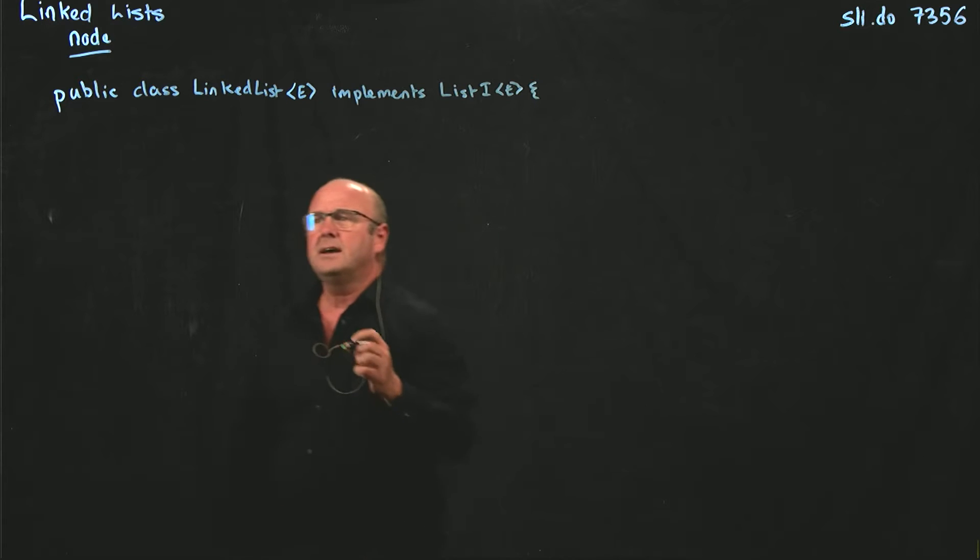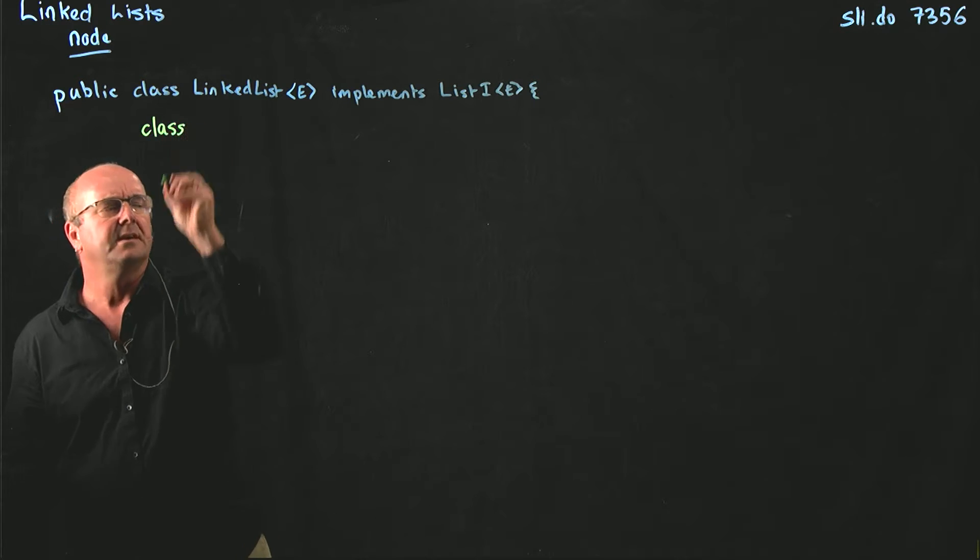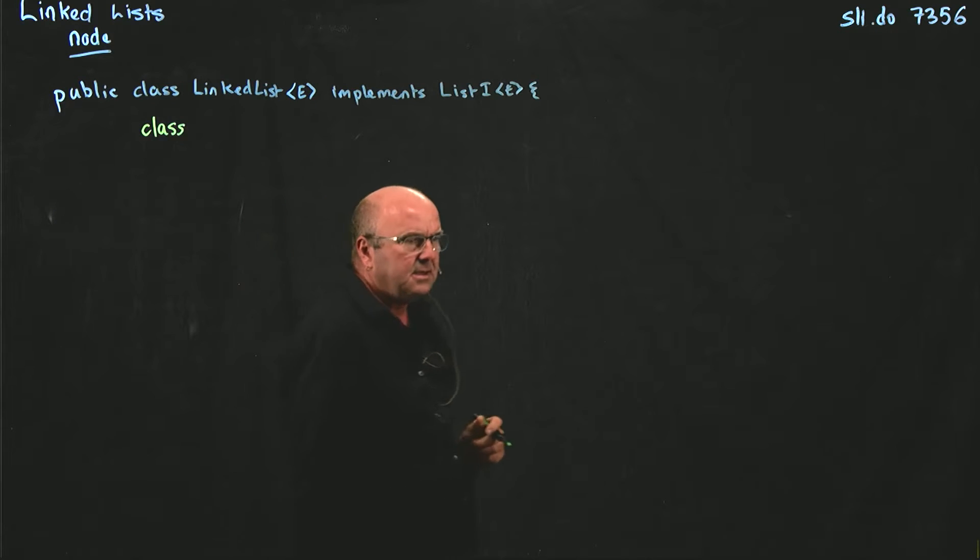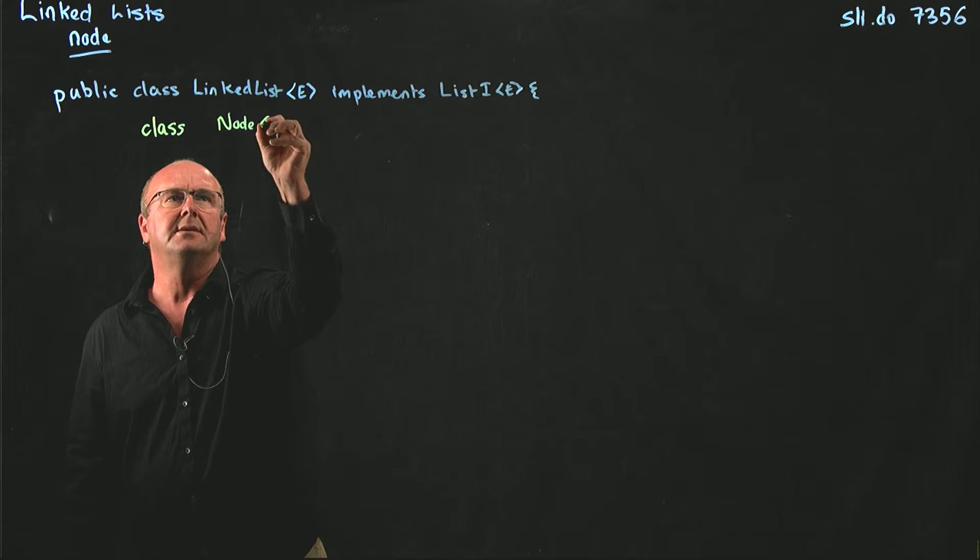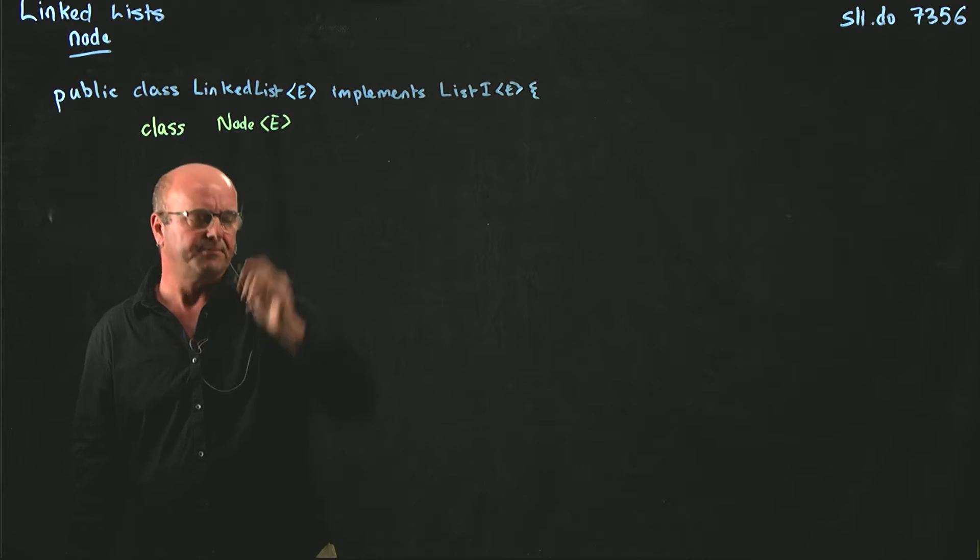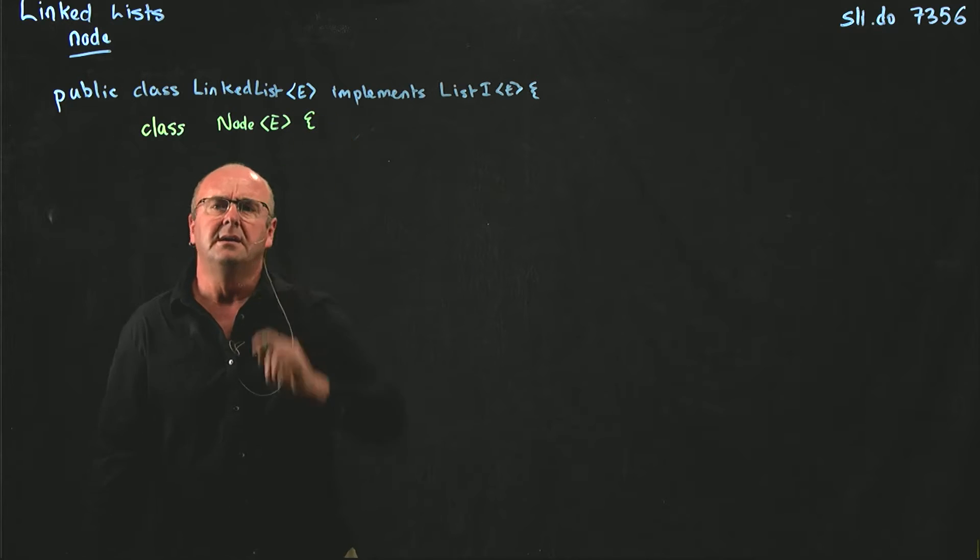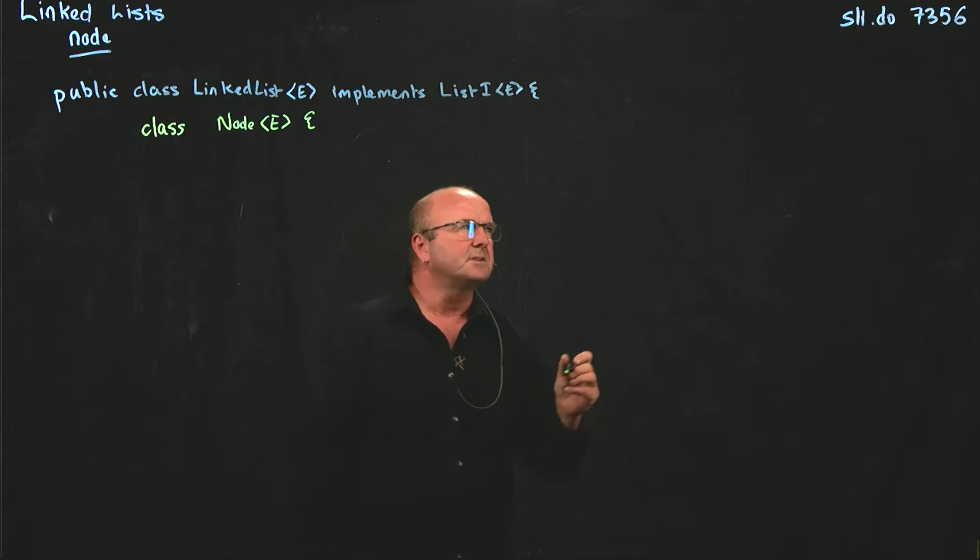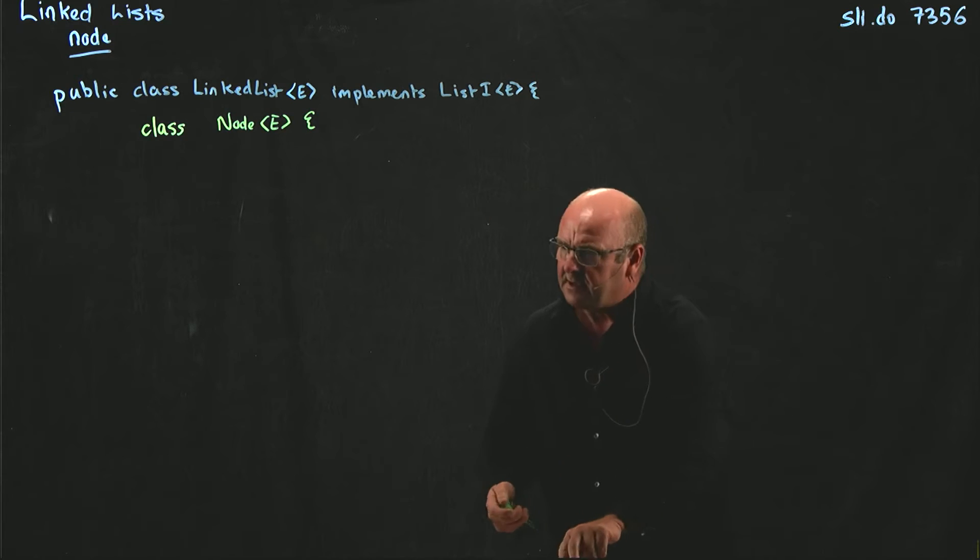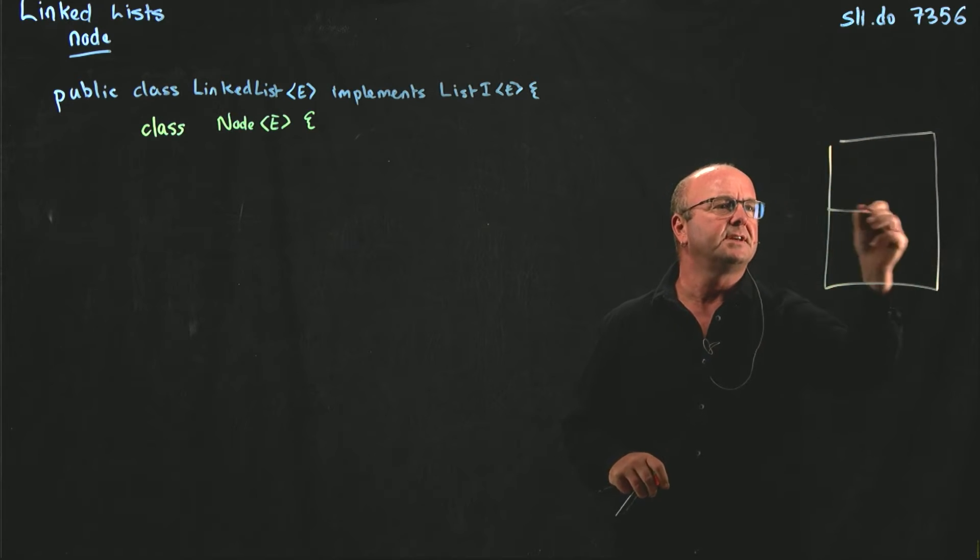And then we're going to have an inner class. This inner class is of type Node E. And our inner class has two things, remember? We've just seen them. In our node object that we drew, we had two things.